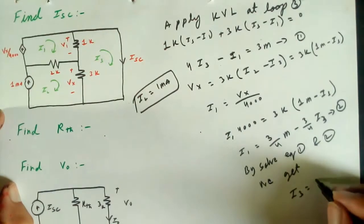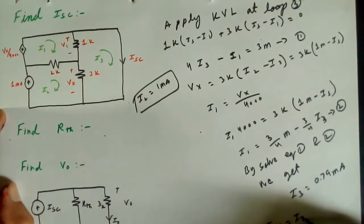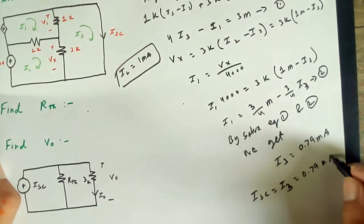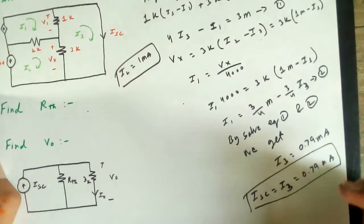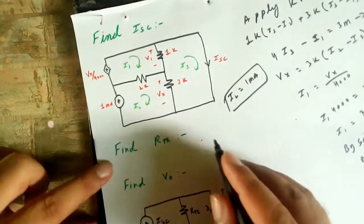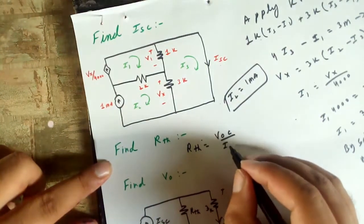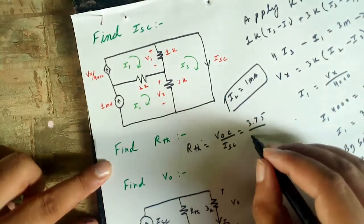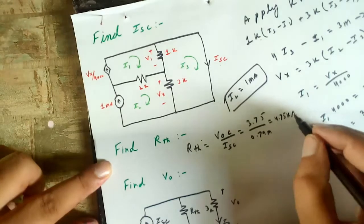I3 is equal to 0.79mA, so Isc is equal to I3 = 0.79mA. Now we want to find the Thevenin resistance, so R_Thevenin is equal to Voc over Isc: 3.75 over 0.79mA equals 4.75kΩ.